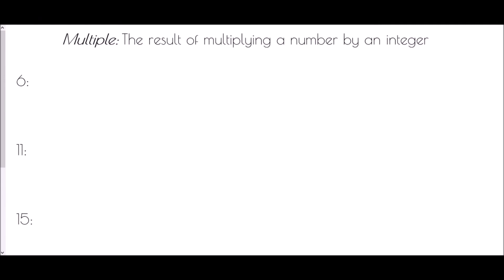Our second definition is multiples. A multiple is the result of multiplying a number by an integer — we're basically just looking at times tables. We generally won't be asked to write them all since they go on to infinity; typically we're asked for five. So for the first five multiples of 6: 6 times 1 is 6, times 2 is 12, times 3 is 18, times 4 is 24, times 5 is 30.